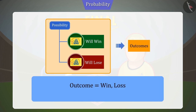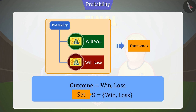For example, winning or losing of Chennai Super Kings will be the two outcomes of the match. If we collect all the outcomes of an experiment, then it becomes a set. In probability, a group of all possible outcomes of an experiment is called sample space.